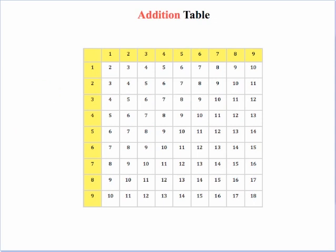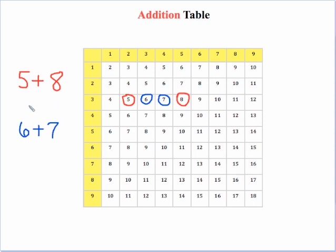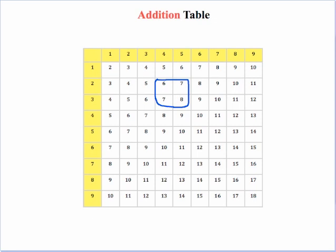Looking at the table one more time: 5 plus 8 and 6 plus 7 are both 13. We add 1 to the 5 to get 6, and subtract 1 from the 8 to get 7 — a plus 1 and minus 1, net change of 0, so we still have the same sum of 13. A pattern students might notice is that some of these combinations are repeated in several places in the addition table.